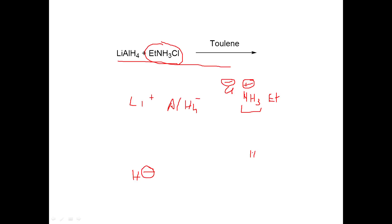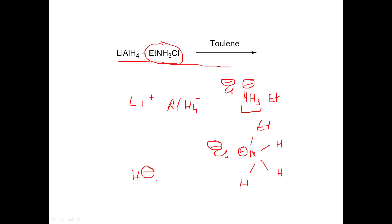If I draw the structure for nitrogen: we have three hydrogens, one ethyl group, and a positive charge stabilized by Cl⁻. The H⁻ is going to extract one of those hydrogens, and one product will be H₂.